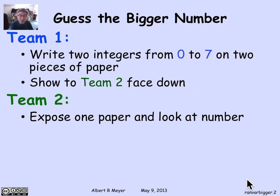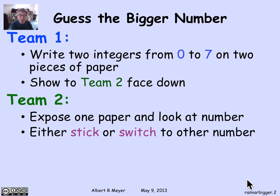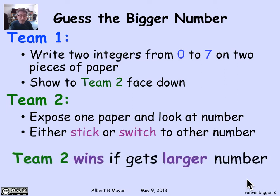What team 2 does is pick one of the pieces of paper, turn it over, and look at the number on it. Then, based on what that number is, they make a decision: stick with the number they have, or switch to the other unknown number on the face-down piece of paper. That will be their final number. Team 2 wins if they wind up with the larger number. They'll try to decide whether the number looks big or small — sticking if it looks big, switching if it looks small.